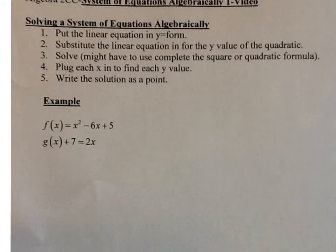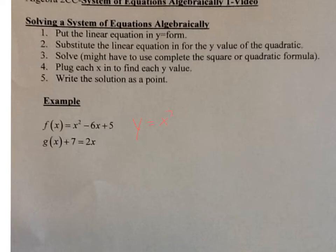The first thing is that you want to put your linear into y equals form. I would take both of these and put them in y equals form. You're going to notice that the linear here is not in g of x equals form. So let's start with the quadratic: y is equal to x squared minus 6x plus 5. The g of x is your y, so y plus 7 is equal to 2x. Subtract 7, and you have y is equal to 2x minus 7.